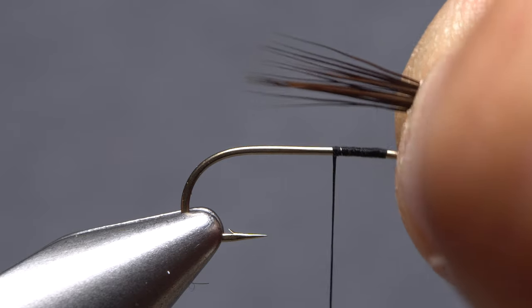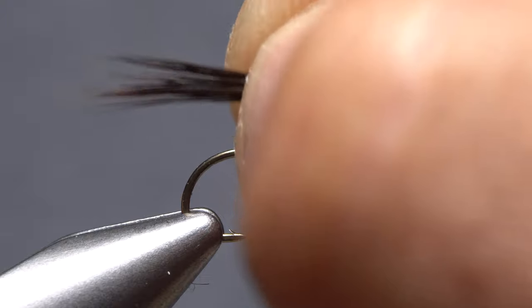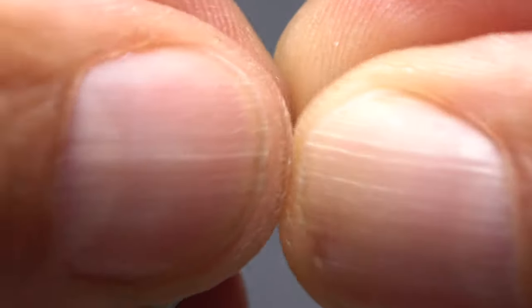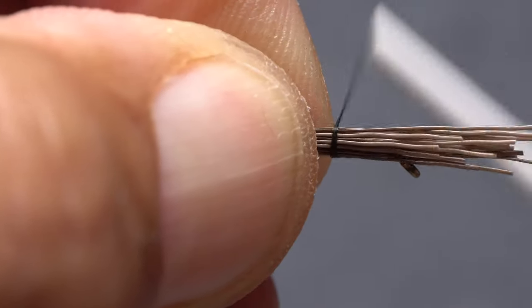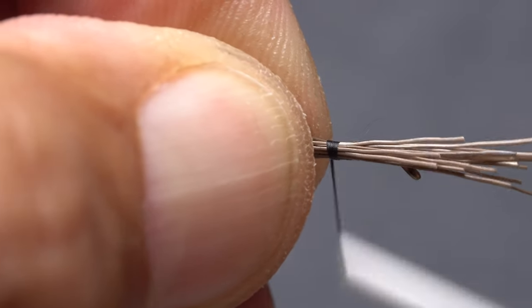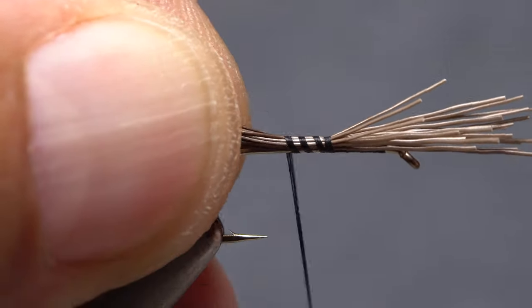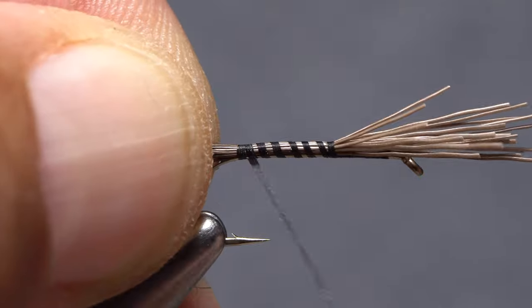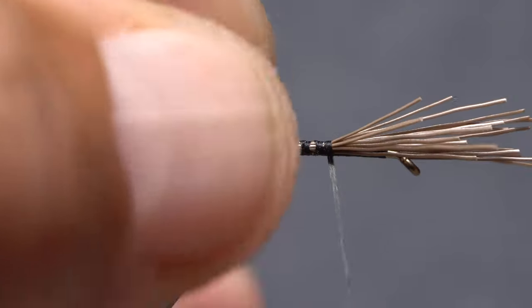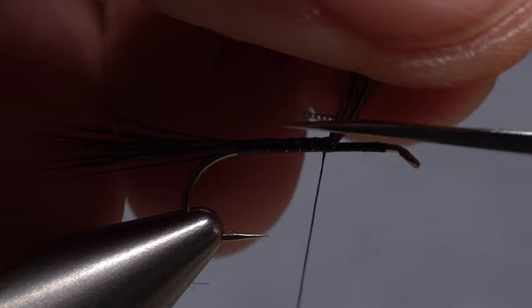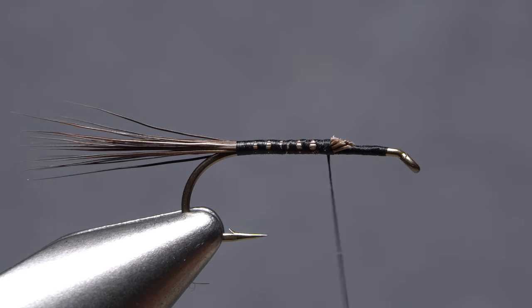Measure to form a tail a hook shank in length, then transfer that measurement rearward to the start of the bend. Take wraps of tying thread to firmly anchor the hair to the hook shank all the way back to the bend. Reposition your thread forward to the one third point on the shank. Lift the butt ends of the hair up and snip them off at a shallow angle.